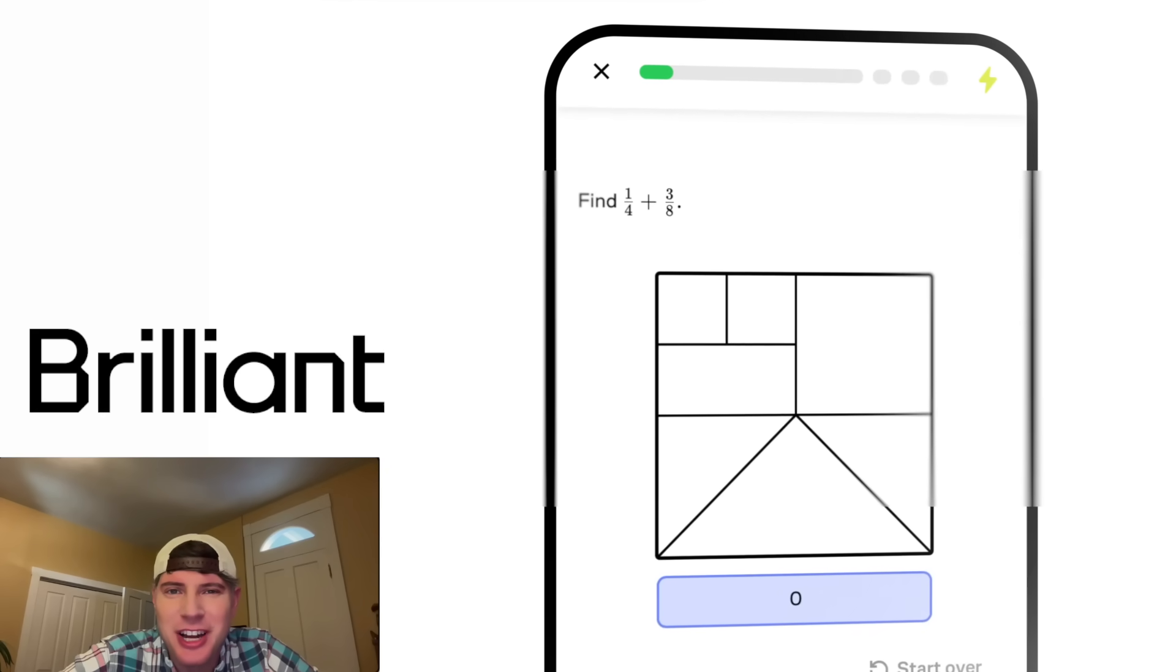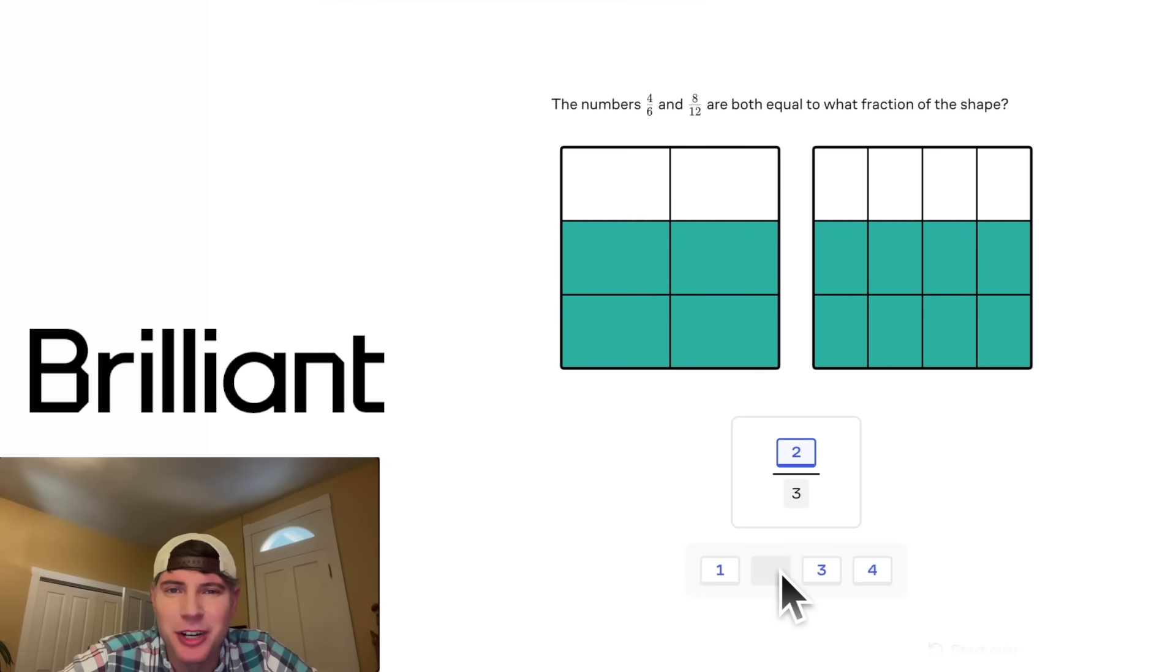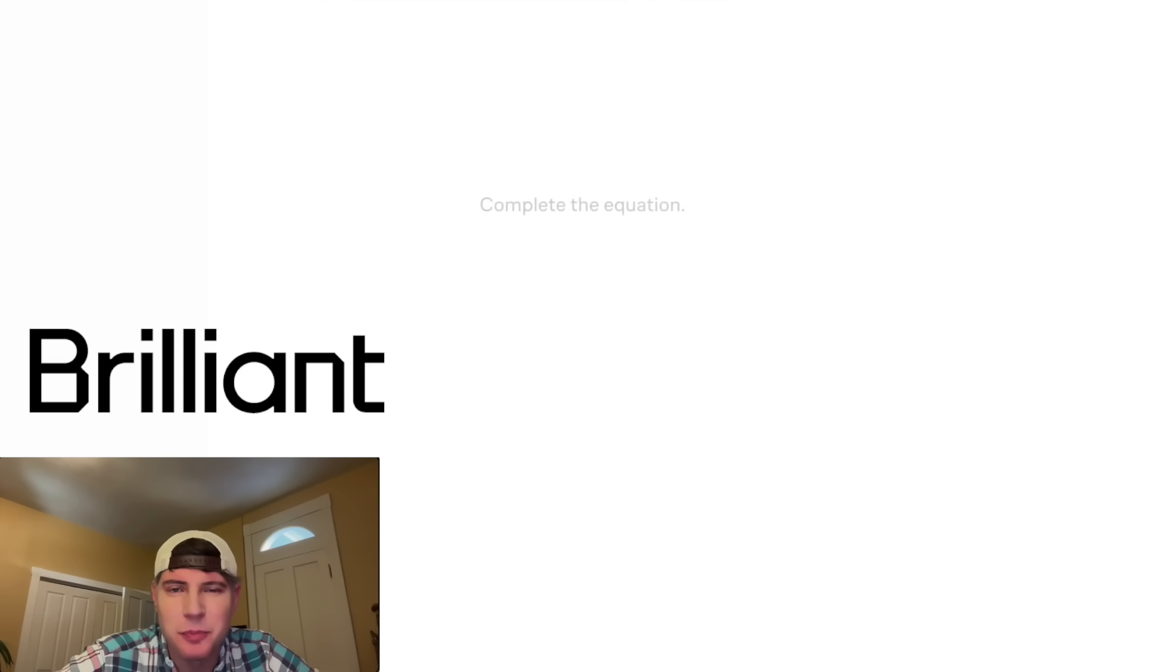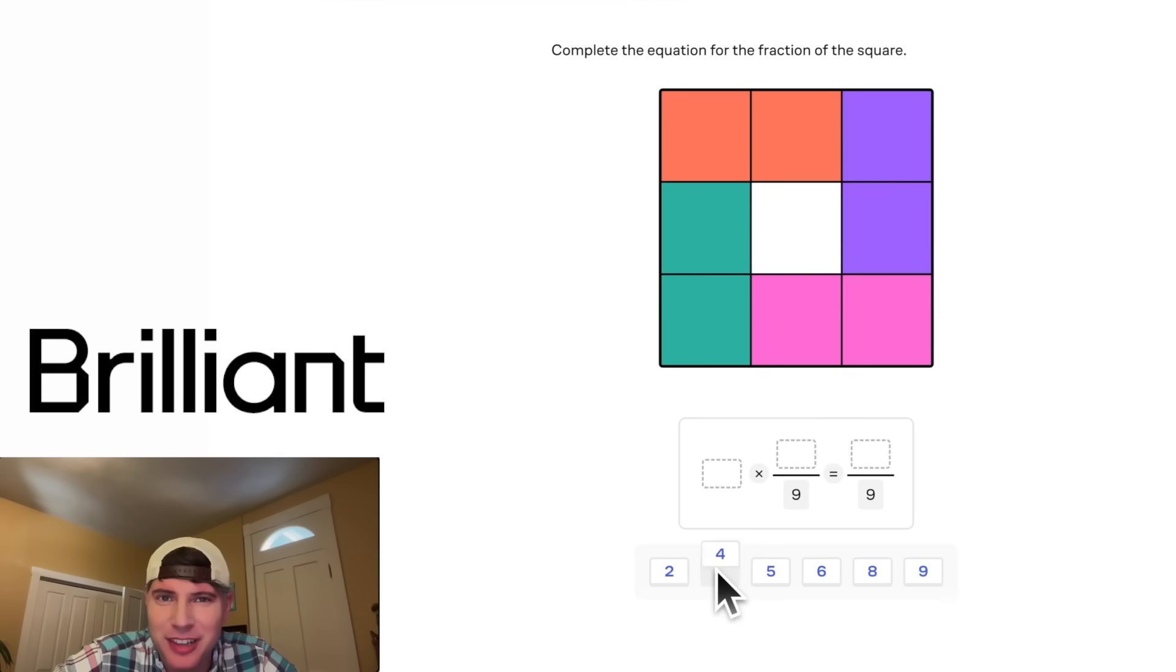If you want to fine tune your geometry and algebra skills so you can solve problems like the one in this video, Brilliant.org has you covered. Brilliant has thousands of lessons in math, data analysis, programming, and AI. And all of them are interactive, which is the most effective way to learn. I also enjoy the flow of the lessons. It's a very relaxing and enjoyable way to learn.